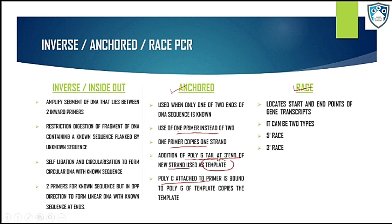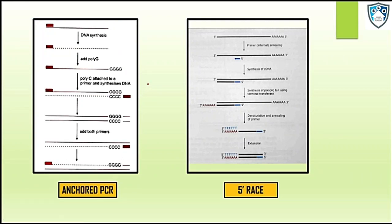Let's move into the diagram for a better understanding. As we can see, DNA synthesis is being carried out by using only one primer. Then we are adding the poly-G into the newly formed DNA template. This is the template with the poly-G at the three prime end.